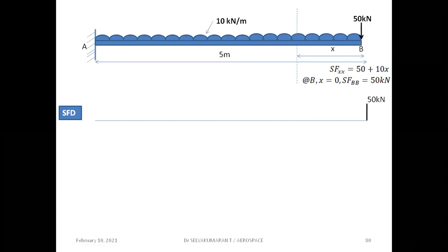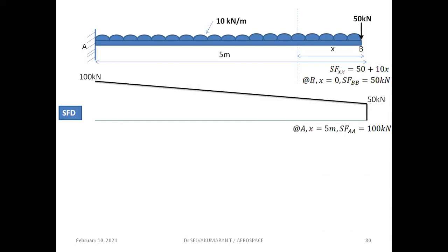From B to A it is the UDL, so the nature of the shear force diagram is inclined straight lines — triangular. At A, x equals 5 meters, shear force at A is 50 + 10×5 = 100 kilonewton. Since it's a UDL, this is the nature of the shear force diagram. The shear force is always maximum at the fixed end of a cantilever beam.